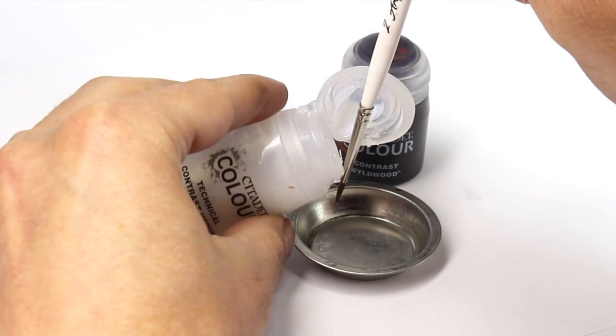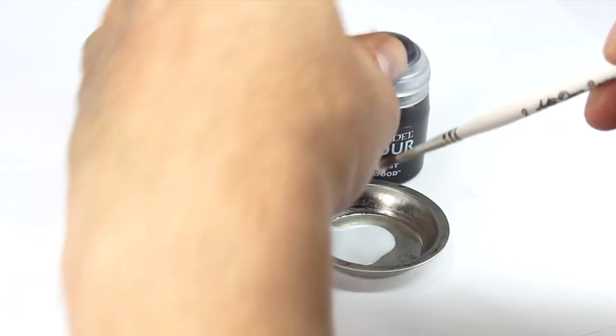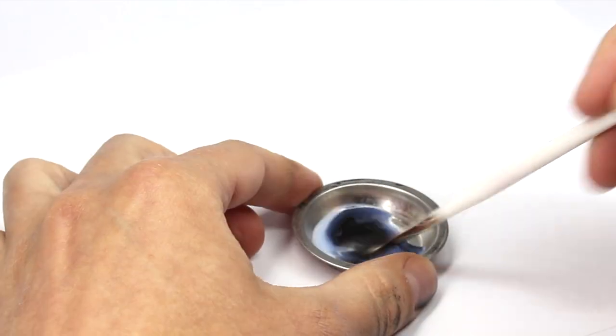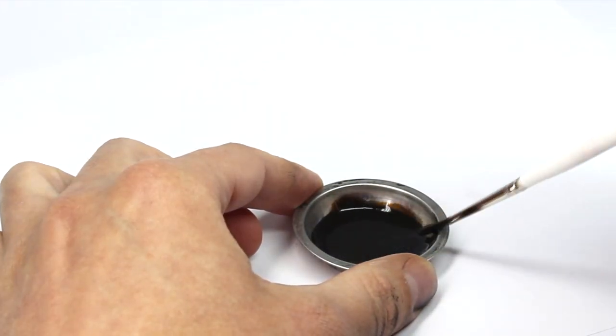To start with we'll thin the contrast paint down a little with the medium. This should make it easier to work with, and we can test that consistency against the side of the dish.